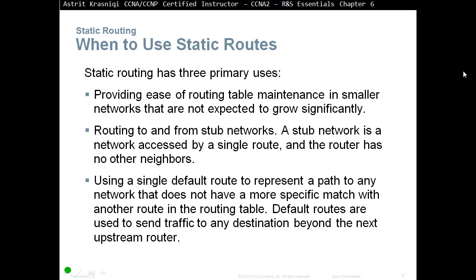Static routing has three primary uses. First, it provides ease of routing table maintenance in smaller networks not expected to grow significantly — a small routing table is easier to maintain with static routing. Second, routing to and from a stub network: a stub network is a network accessed by a single route where the router has no other neighbors. Third, using a single default route to represent the path to any network that doesn't have a more specific match in the routing table.